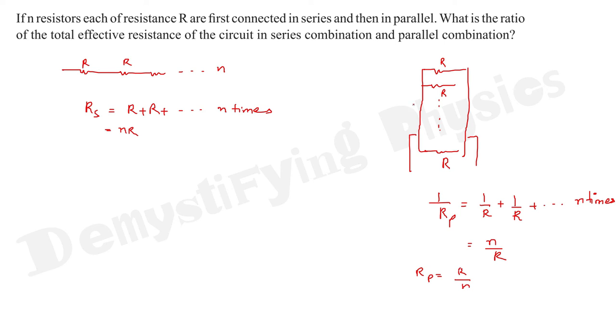Now what is asked? You have to take the ratio: effective resistance in series combination upon effective resistance in parallel combination. So it is nR upon R by n. Take this n in the numerator, you get n squared ratio 1.